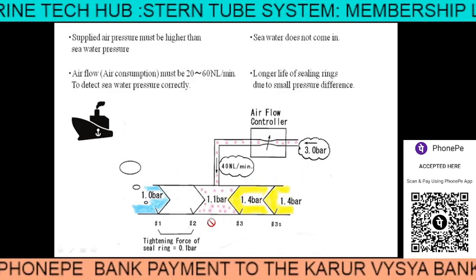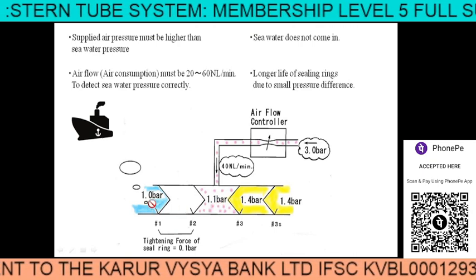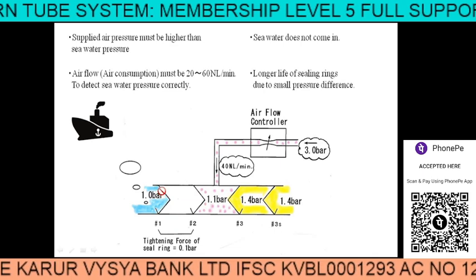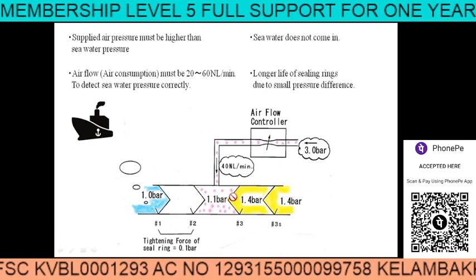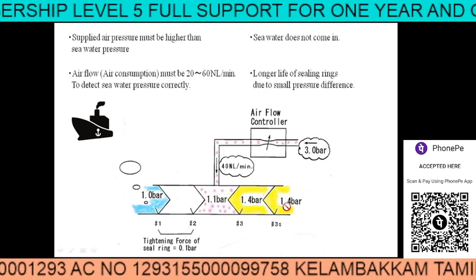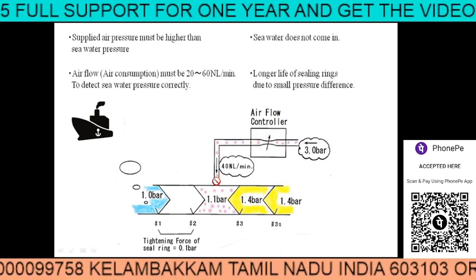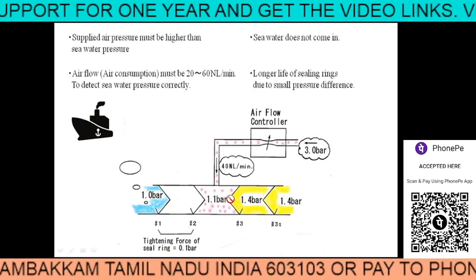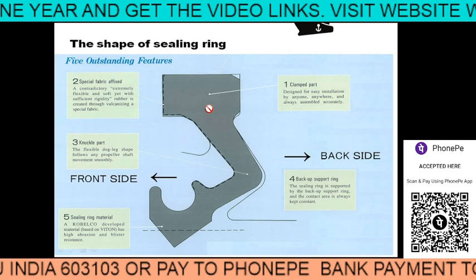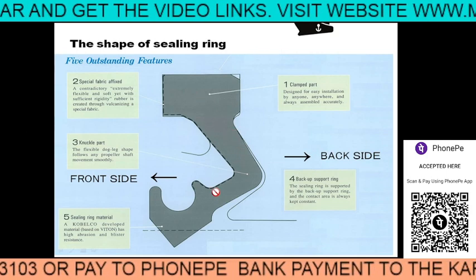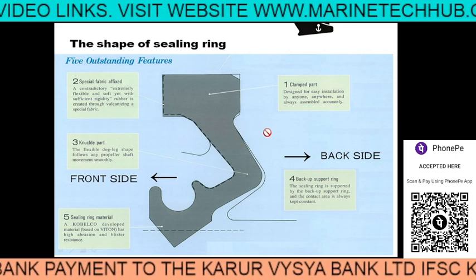We are maintaining 1.1 bar pressure here — sea water pressure is 1 bar — and these are the sealing rings. The yellow color is the oil, you can see the pressure at 1.4 bar. We give controlled air pressure through this, so we are trying to keep water from coming in and oil from going out. This is the sealing ring and the shape of it — this is the one inside the stern tube system.